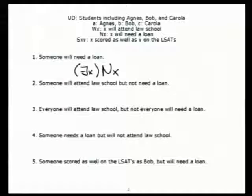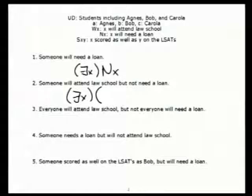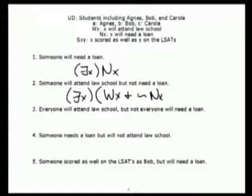I said there exists an X such that WX and not NX. But I'm going to bind the whole thing with the same parenthesis — so it's ampersand. There's somebody who, on the one hand, will attend law school, but on the other hand, won't need a loan.